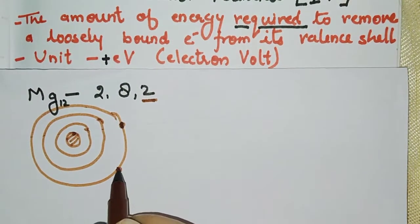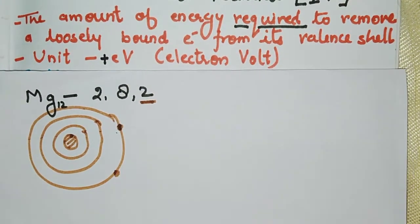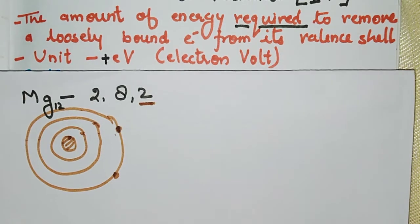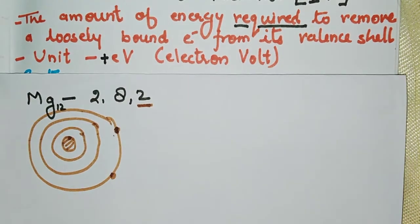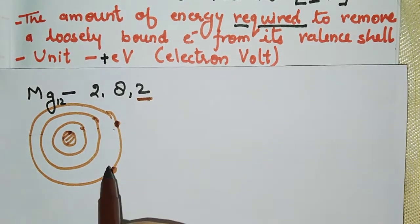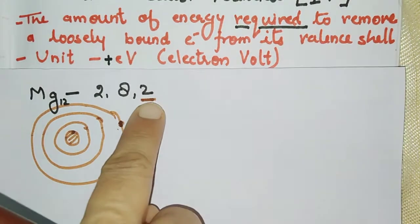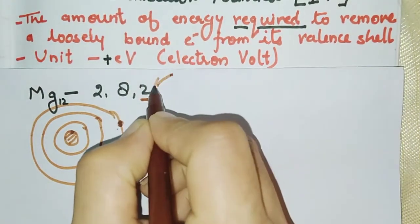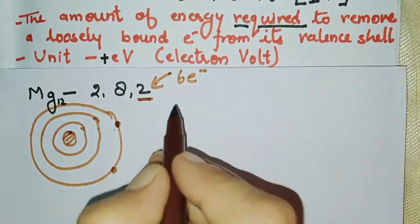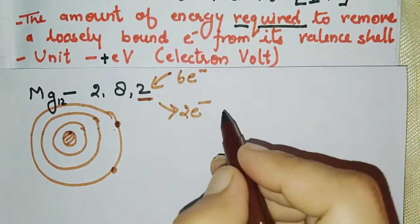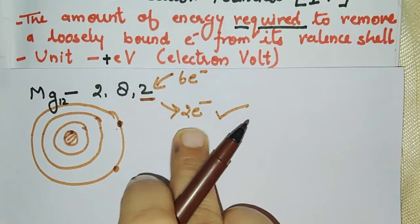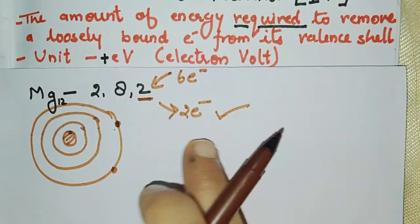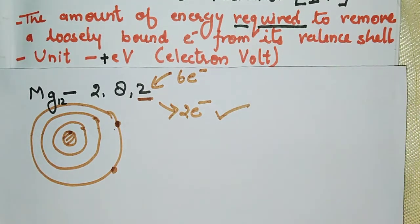The last shell, which we call the valence shell, has 2 electrons. To satisfy the octet rule, there are 2 conditions: either it takes 6 electrons or gives away these 2 electrons. It is easier to give away 2 electrons. Magnesium will donate its electrons, but not both at once.